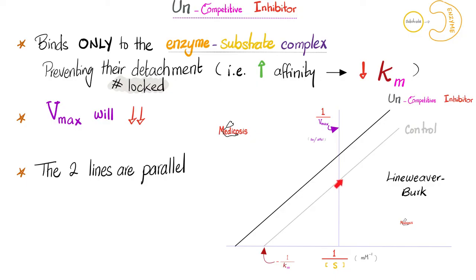The uncompetitive inhibitor binds only to the enzyme-substrate complex when both are hugging each other, locking them in that position and not allowing them to detach. This means they will be hugging each other longer, so Km will decrease. Vmax will also decrease, which means 1 over Vmax will go up. Since Km decreased, the line shifts to the left. Looking at the old line versus the new line on the Linweaver-Burk plot, they are parallel.